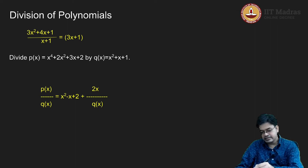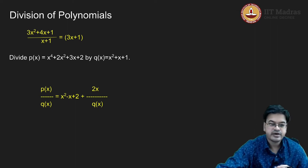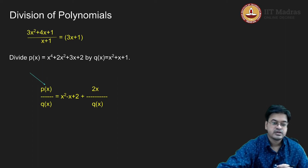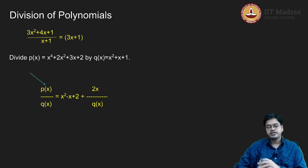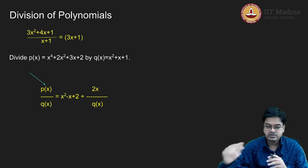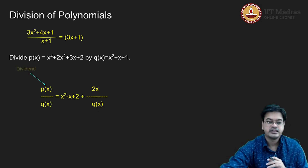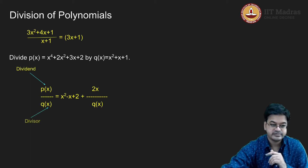Let us go to the next slide and emphasize the algorithm that we have derived just now. In order to understand the algorithm, you need some terminology. For example, P(x) is called the dividend and Q(x) is called the divisor.